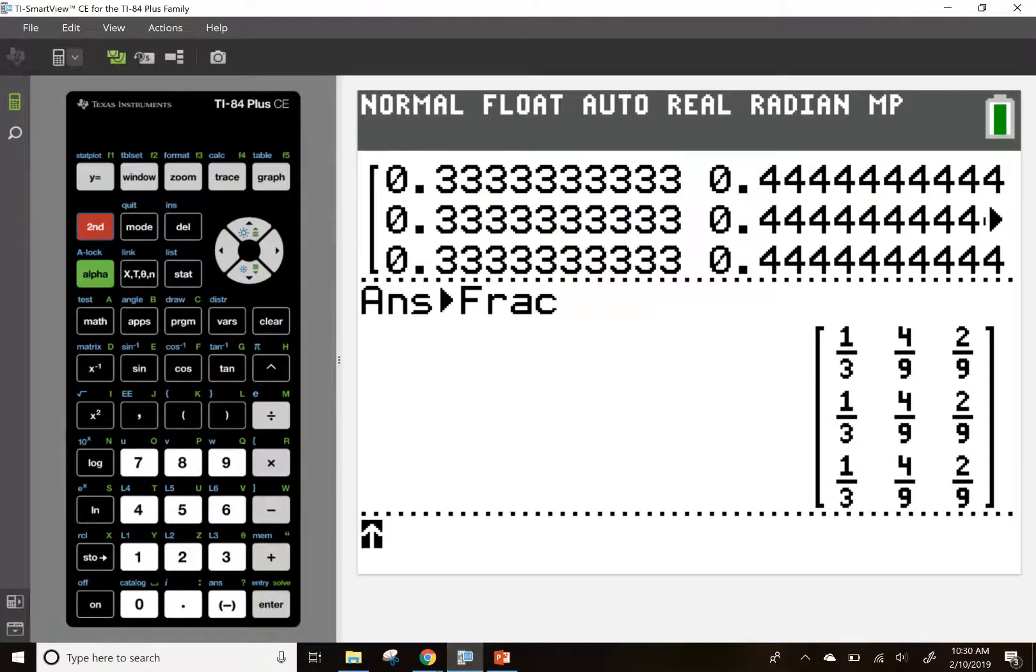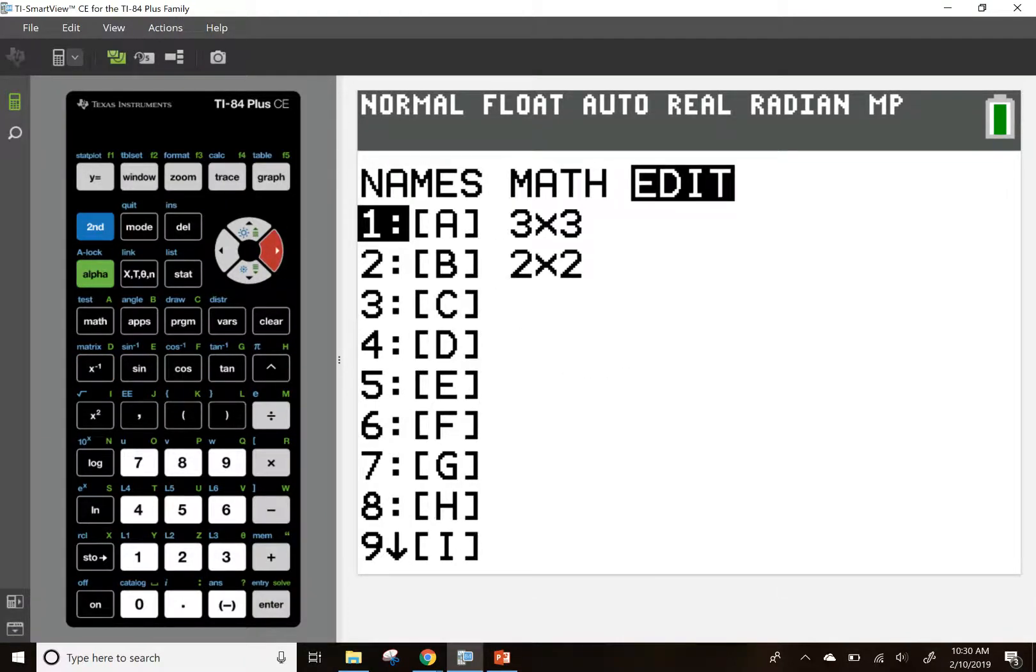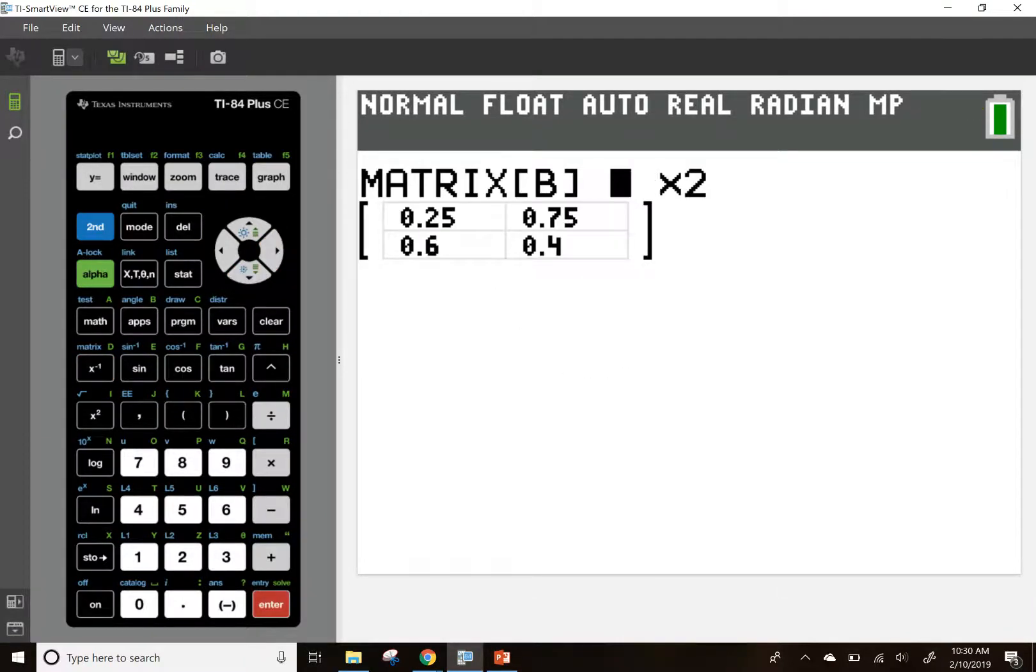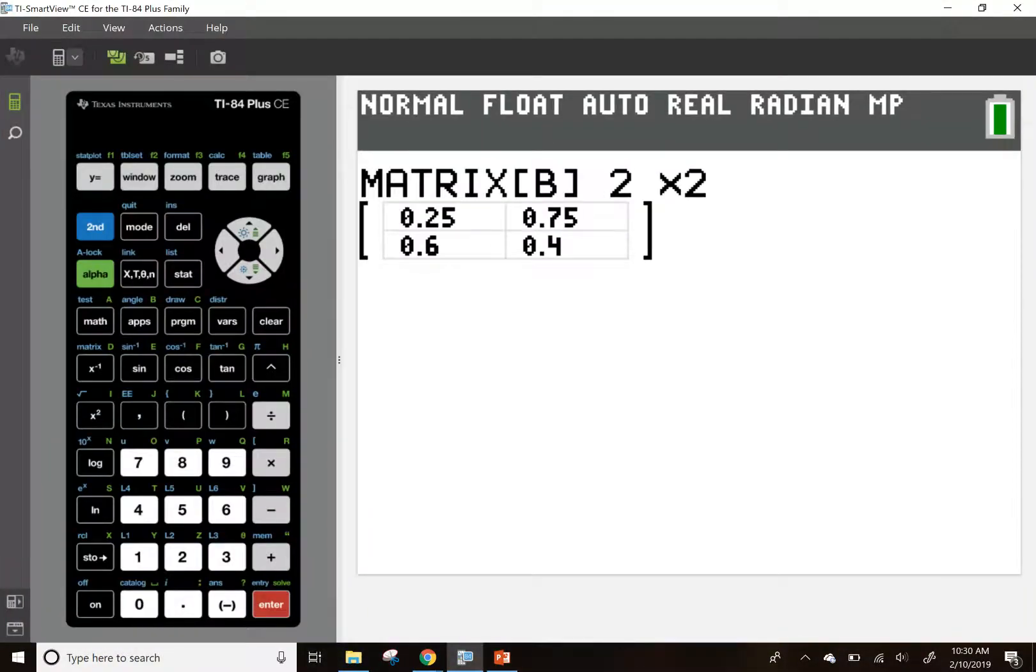I believe I've already typed this in because, yeah, that is the same thing, right? 0.7, 0.25, 0.75, yeah. Because I already did it in the last video, but it got cut out.